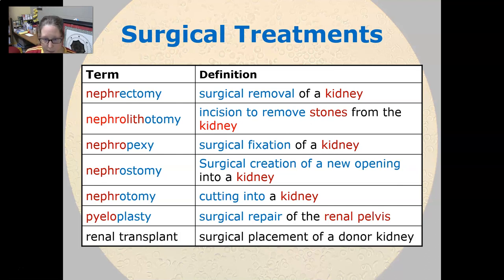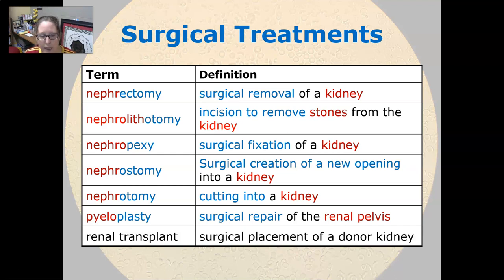Nephrostomy is the surgical creation of a new opening into a kidney. Nephrotomy is cutting into a kidney. Pyeloplasty is the surgical repair of the renal pelvis. And renal transplant is the surgical placement of a donor kidney.